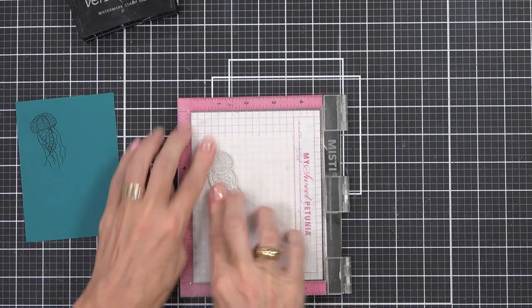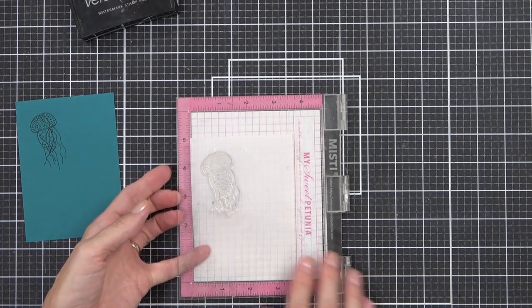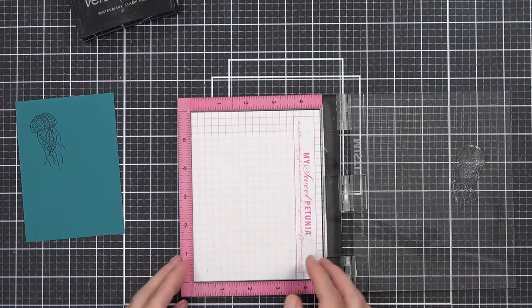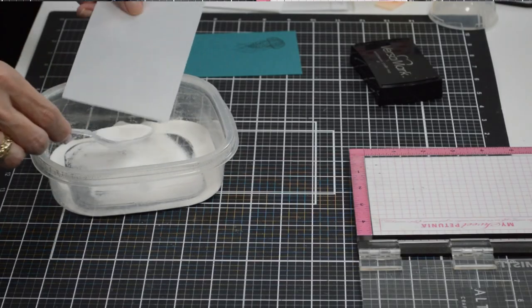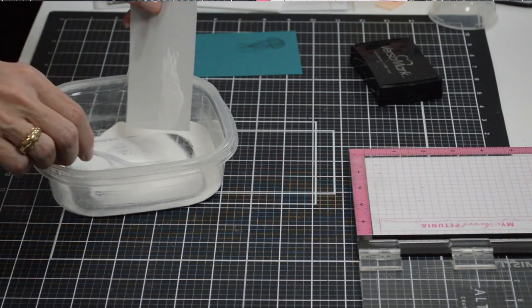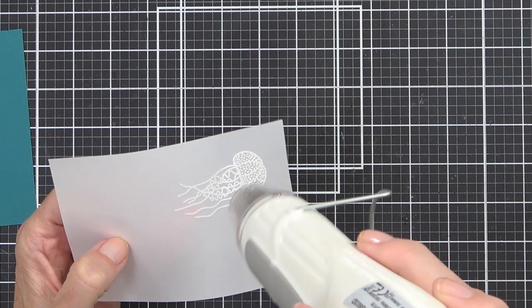So I did plan this out a little bit in advance but not a lot, and I thought it'd be really fun to use these jellyfish and light them up. So what I did was create a panel to go on the front of my card with some peacock cardstock, and I want to create the jellyfish panel to be exactly the same but sit behind it and be made out of vellum.